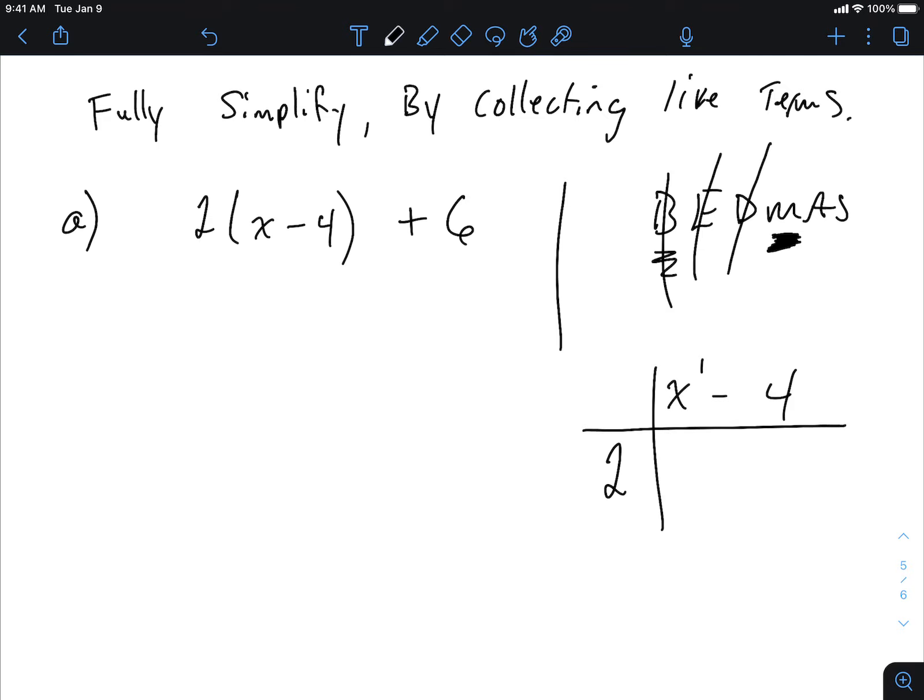In this particular question, here's what you got. You have 2 and x minus 4. Now, I'm also going to say something for everybody's benefit because this will come up again. Anytime you see just a variable or something just floating, there is an imaginary number 1 sitting out front. Because 1 times anything is itself.